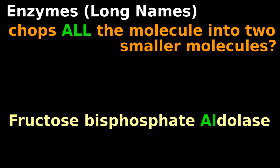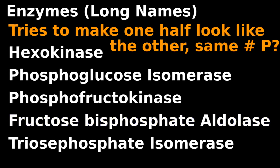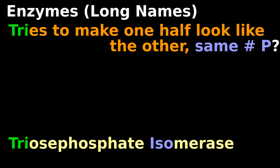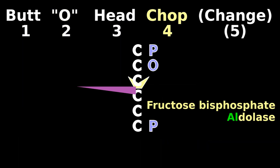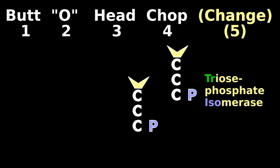Enzymes: Which enzyme chops the molecule into two smaller molecules? Fructose bisphosphate aldolase. Which enzyme tries to change one half to look like the other, leaving the same number of phosphates afterwards? Triose phosphate isomerase. Butt, o, head, chop and change.